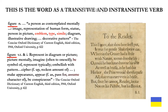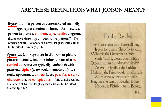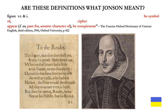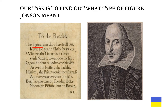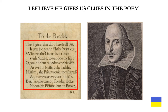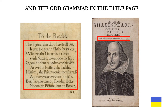Are these sub-definitions what Jonson meant? Let's look at it as a verb — be symbol of, cipher, appear, pass for, assume character of, be conspicuous. Our task is to find out what type of figure Jonson meant. I believe he gives us clues in the poem and the odd grammar in the title page: 'published according to the true original copies.'